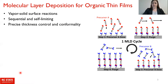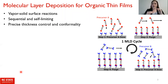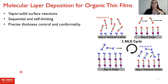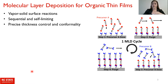I will begin with a brief introduction of molecular layer deposition, which is analogous to organic atomic layer deposition. This process is a layer-by-layer thin film synthesis method relying on sequential vapor-solid surface reactions, where a precursor reacts with all active sites on a surface in a self-limiting way. Once all active sites are occupied, no more growth can occur for that cycle. By repeating cycles, we can get a very thin, controllable film where we control the thickness on the sub-nanoscale, and we can coat conformally on even high aspect ratio structures and complex shapes such as particles.